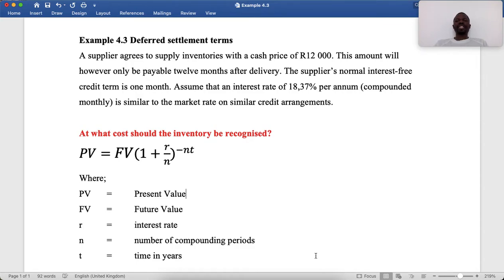Welcome viewers, we continue with examples in descriptive accounting 21st edition. We are on the topic IAS 2 chapter 4 inventories. Today we are working on example 4.3 deferred settlement terms.